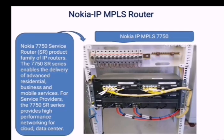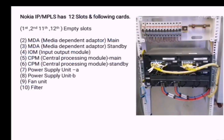Let's have a look at the Nokia IPM PLS router hardware. This Nokia IPM PLS is used in mobile core networks for long-haul services and in 5G services. For service providers, it is used in advanced residential, business, and mobile services, and in networking or cloud data centers. It aggregates with DWDM to provide high data rates.